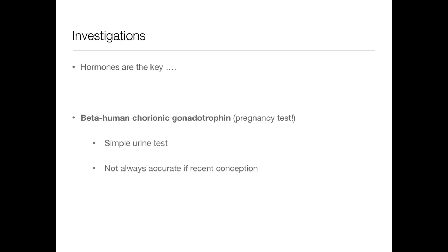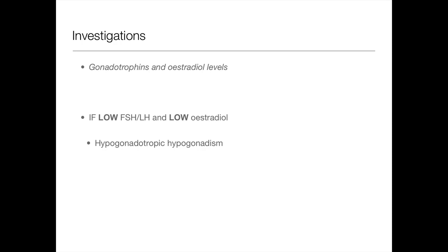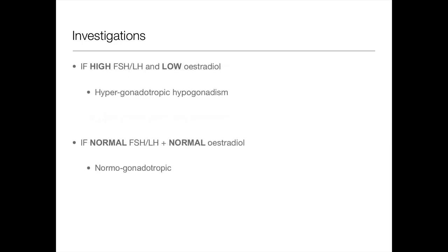Now, history and examination are crucial — the history gives you the answer most of the time. But there are important investigations. In any pre-menopausal woman presenting with amenorrhea, do a beta-HCG test — a simple urine test checking for pregnancy. Then check gonadotrophins and oestradiol levels. Low FSH and low oestradiol indicates hypogonadotrophic hypogonadism. High FSH and low oestradiol indicates hypergonadotrophic hypogonadism. If both are normal, it's normogonadotrophic.